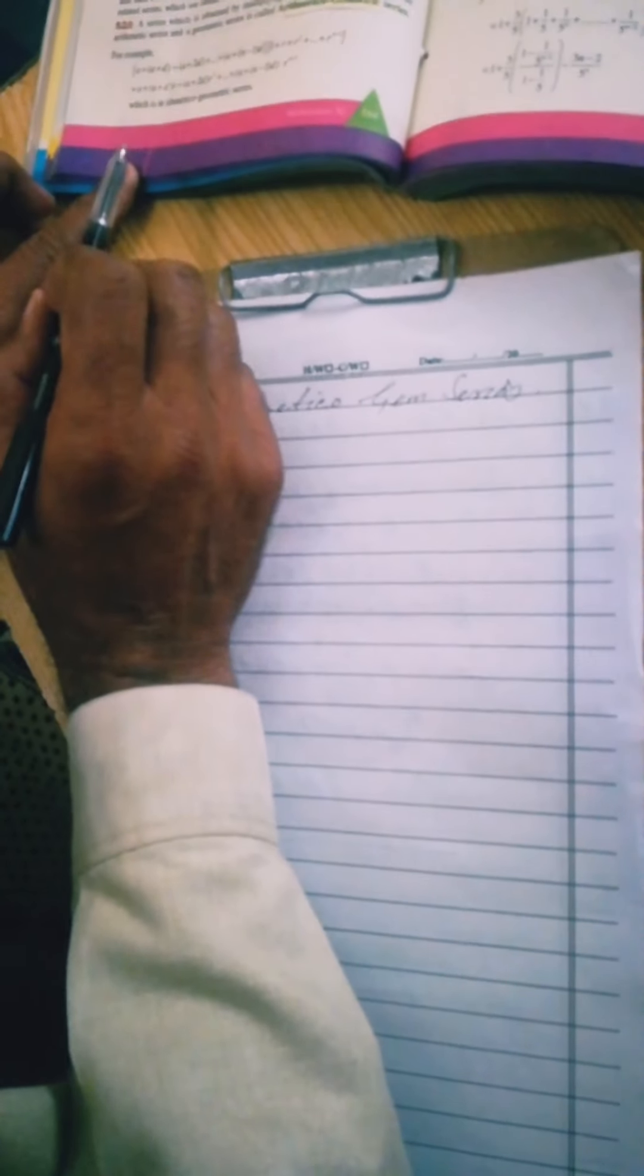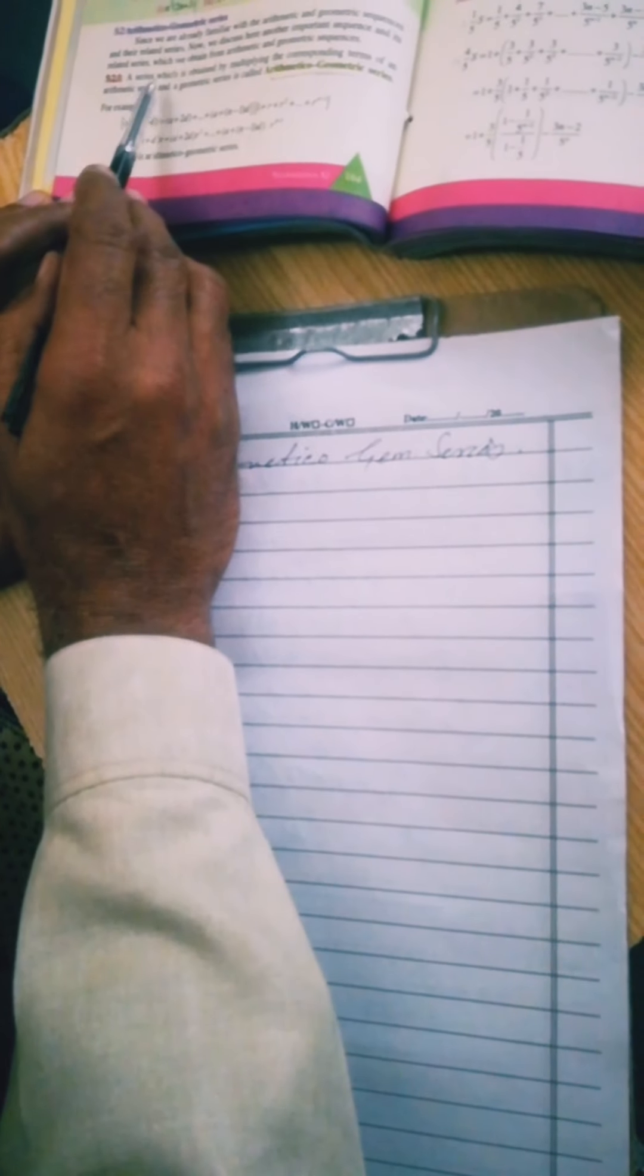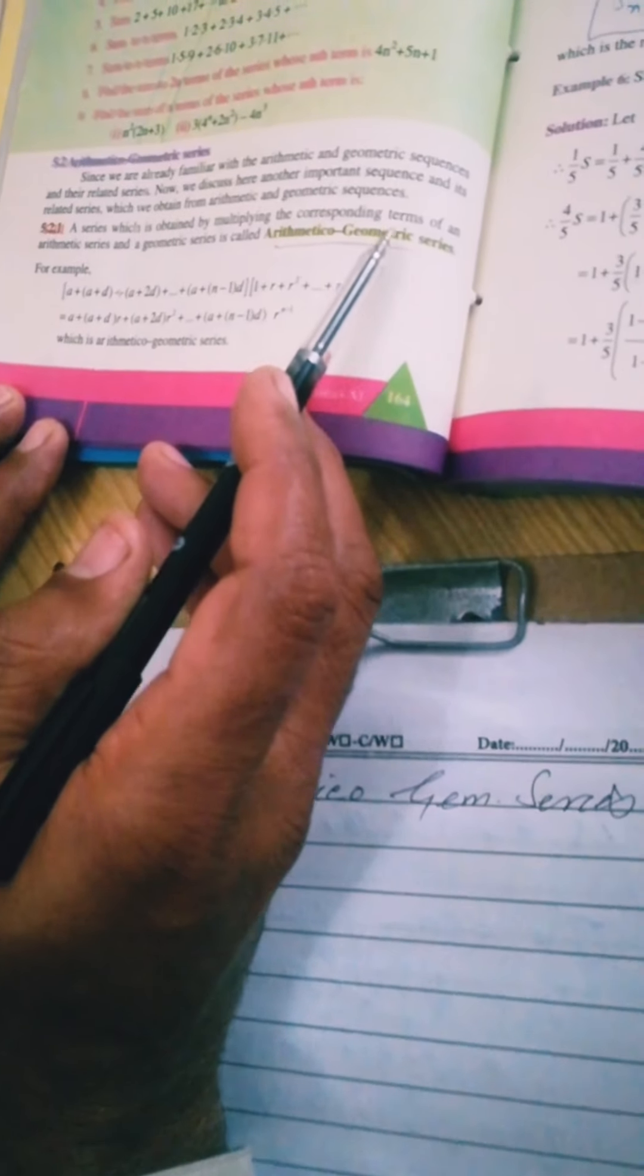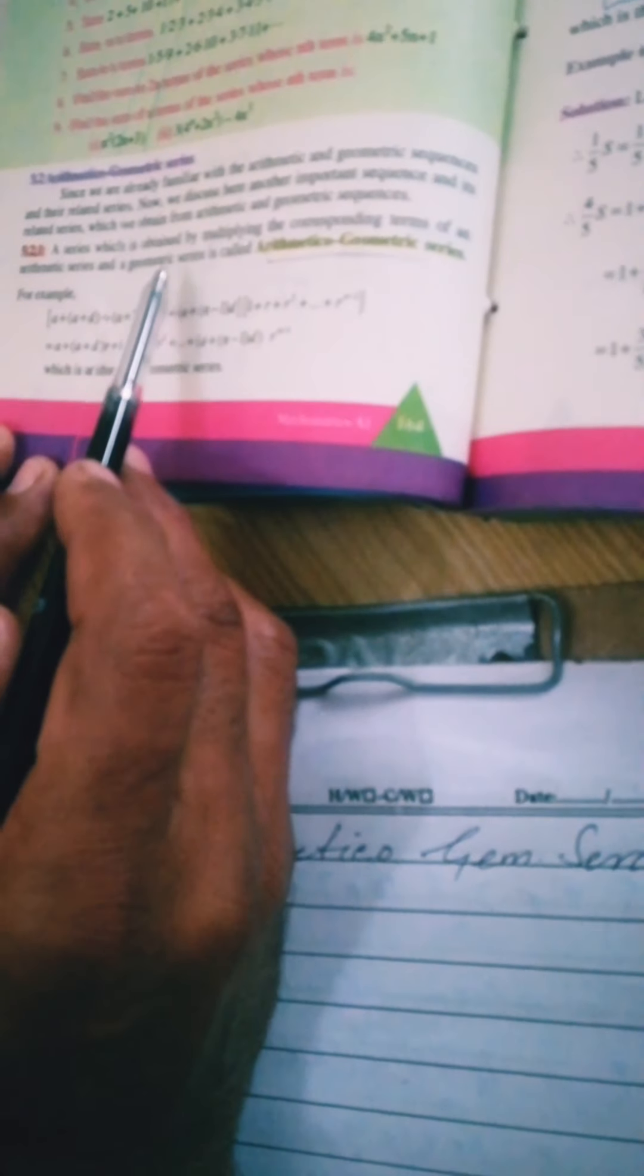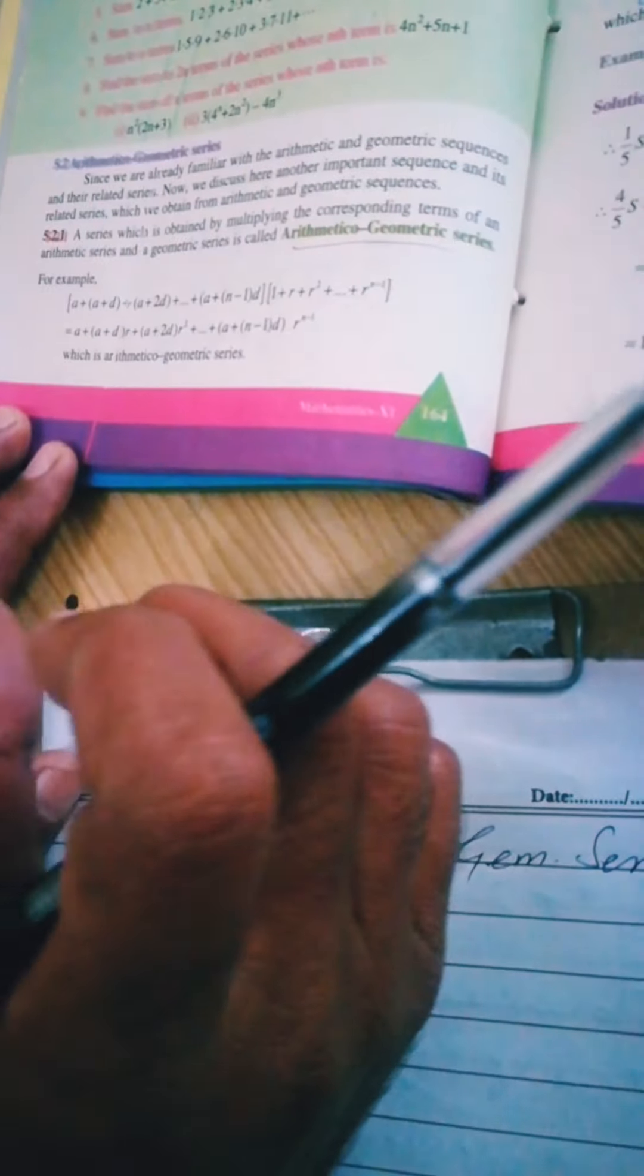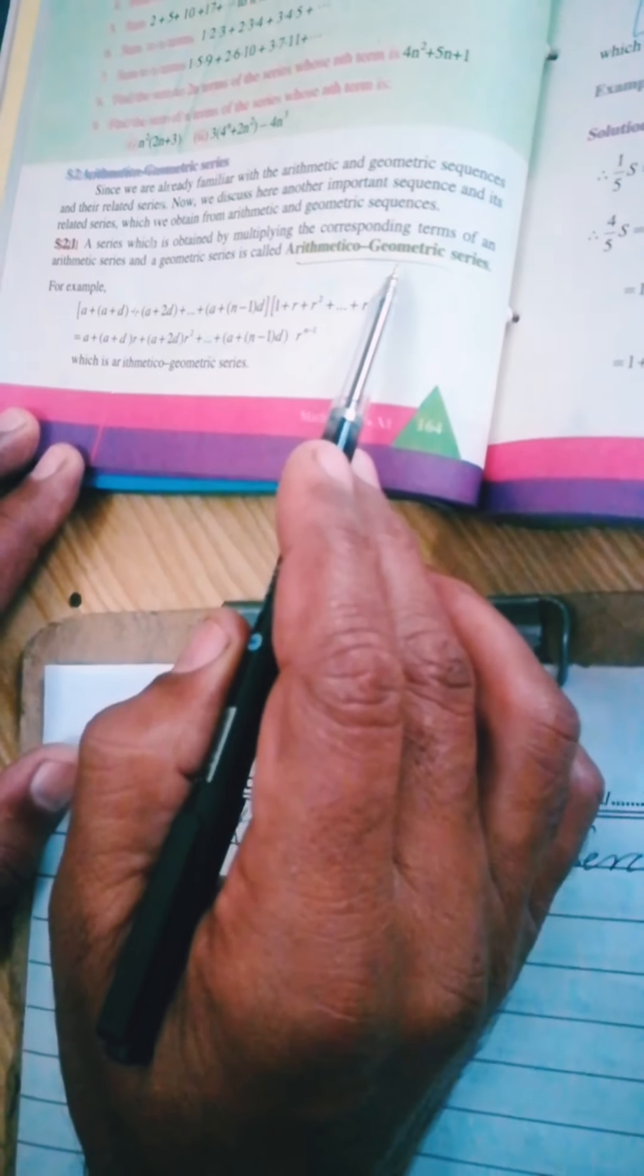This is written on page number 164. The definition is written: a series which is obtained by multiplying the corresponding terms of an arithmetic series and geometric series. This is called Arithmetico Geometric Series.